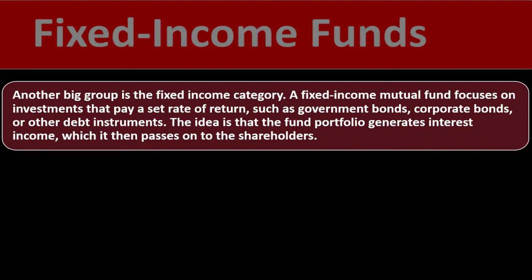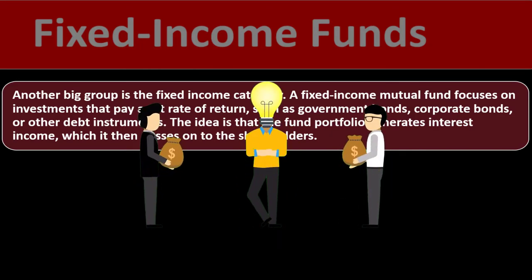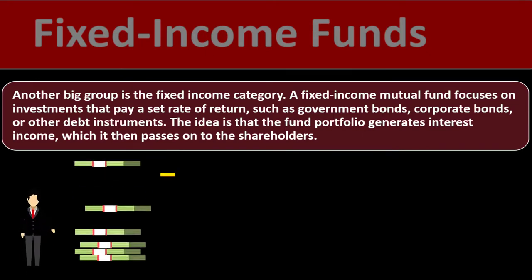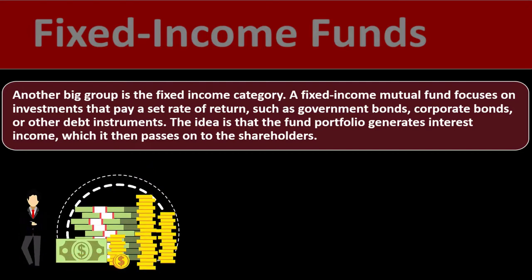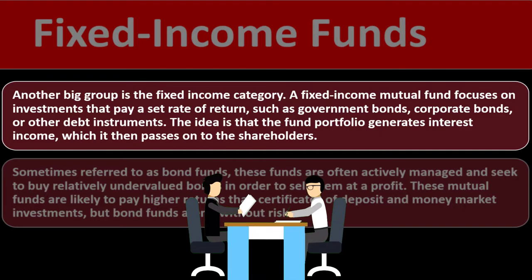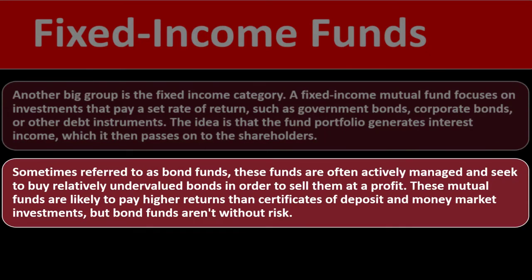The idea is that the fund portfolio generates interest income which is then passed on to the shareholders. If you have a fund that's investing in bonds — types of investments that have set returns like interest — that's a way to get interest income. This might be something you're looking for towards retirement, when you want income to live on, as opposed to younger years when you might be investing in things more likely to reinvest and grow in value. Sometimes referred to as bond funds, these funds are often actively managed and seek to buy relatively undervalued bonds in order to sell them at a profit.